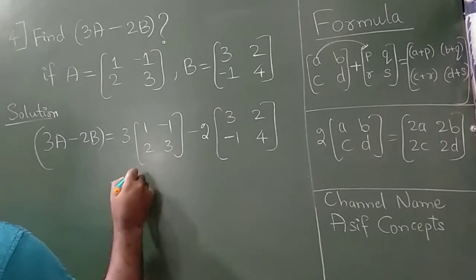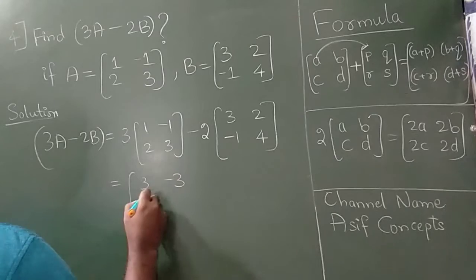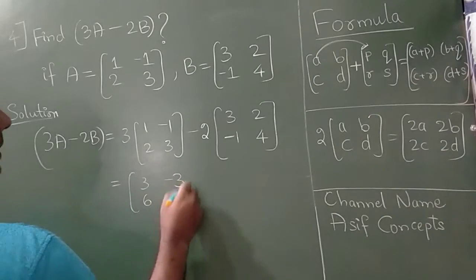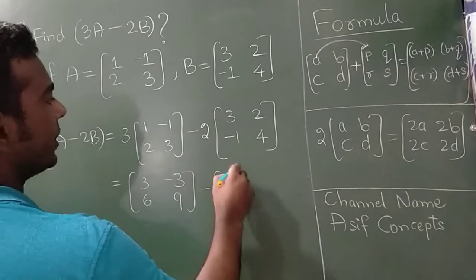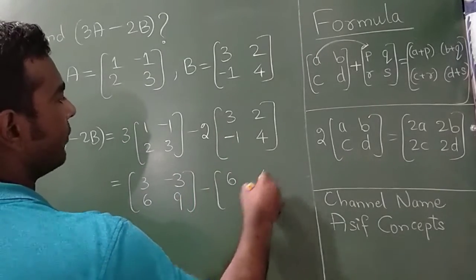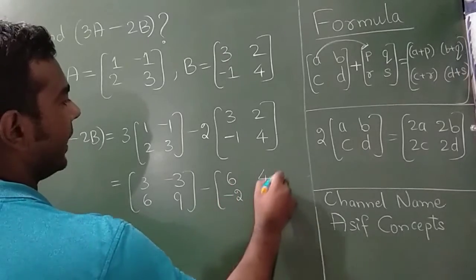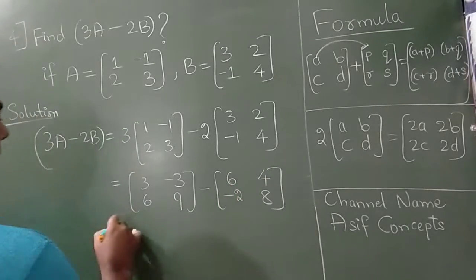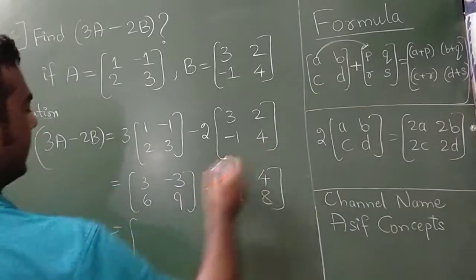Multiply this 3 for all. 3 1s are 3, 3 2s are 6, 3 3s are 9. Minus: 2 3s are 6, 2 2s are 4, minus 2, 4 2s are 8.